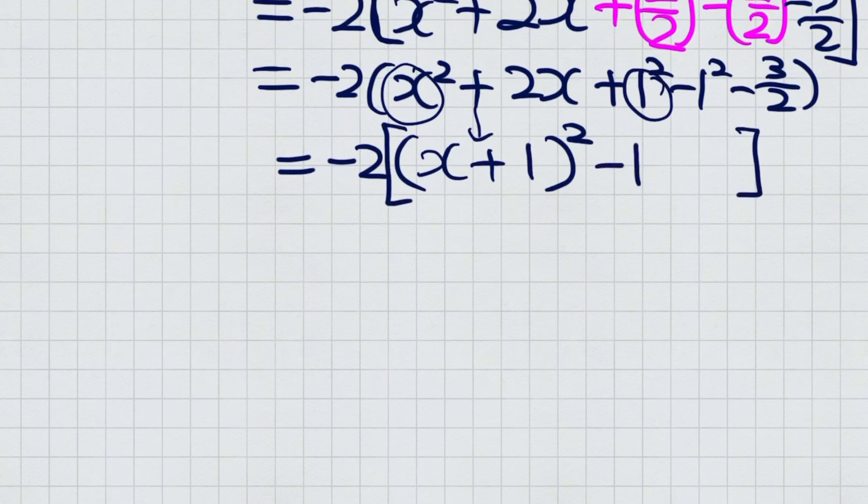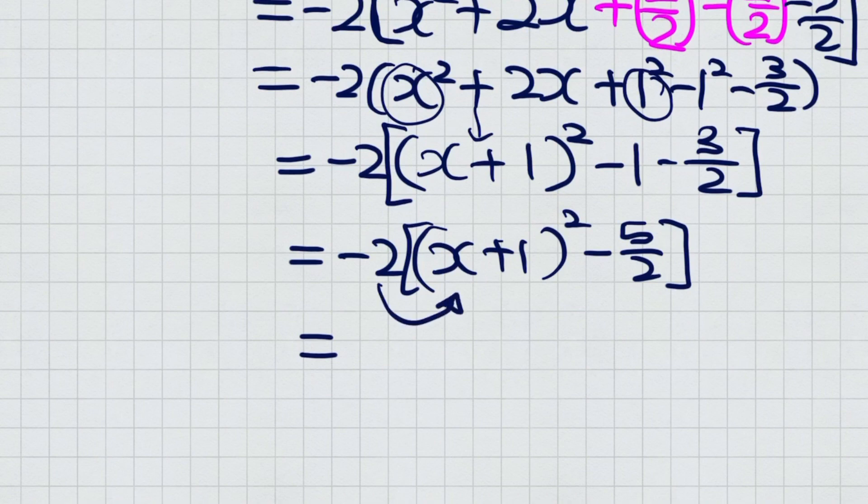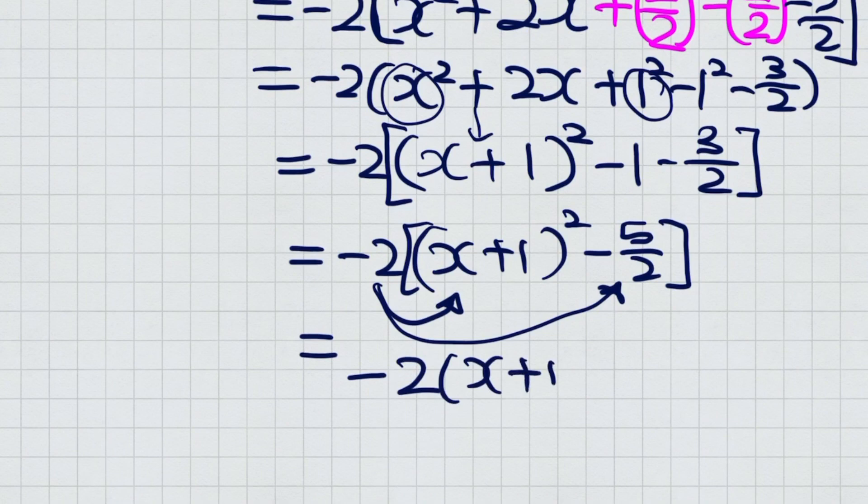Evaluate the rest. Take note, this is squaring the 1. Negative is outside, so in the end this equals -1. So -1 minus 3/2, you should get -5/2. Remove the outer layer of this bracket by multiplying the -2. So you should get -2(x + 1)² + 5.